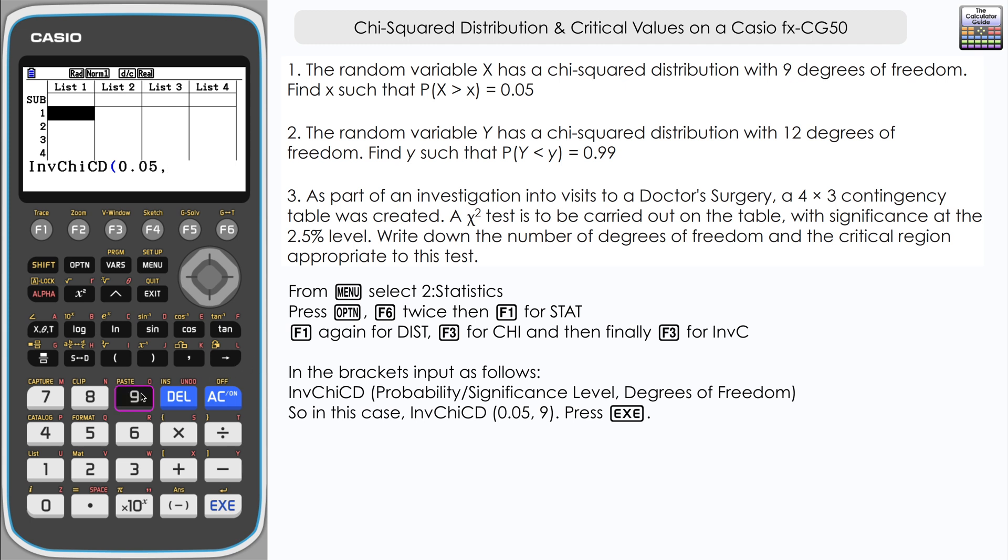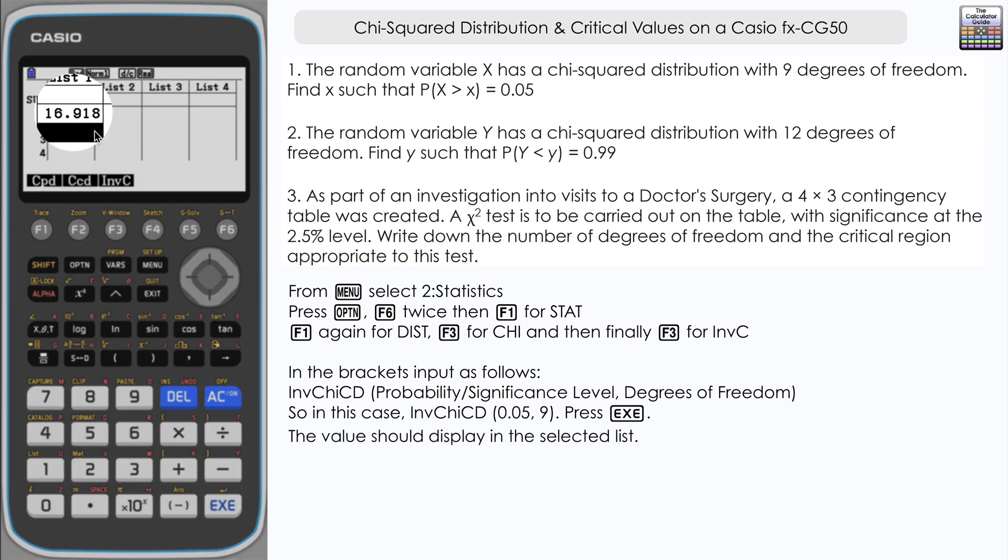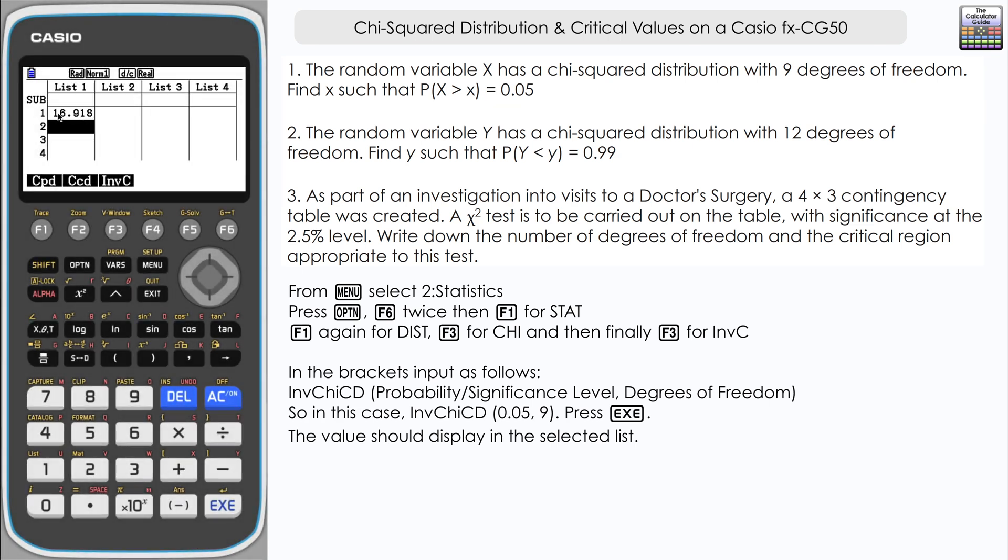And then close brackets and then press execute. Here you can see where we have the space in list 1, it's just printed out our answer there: 16.918.